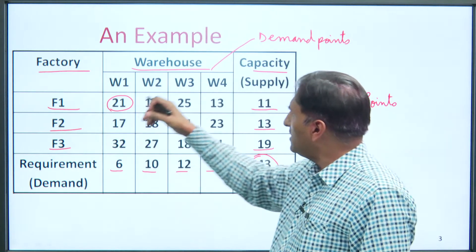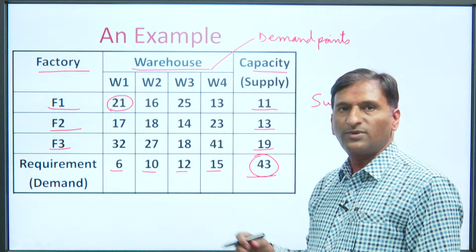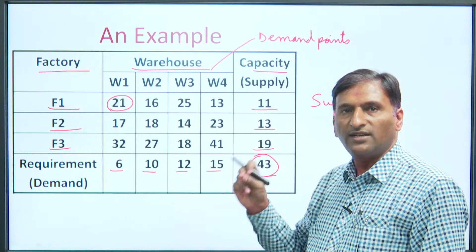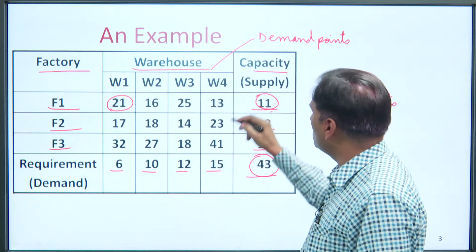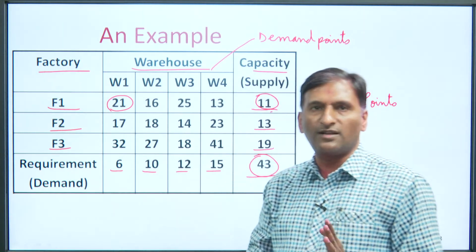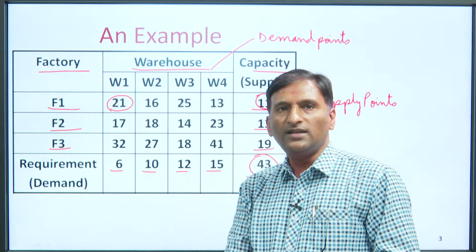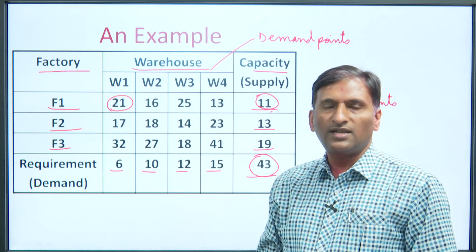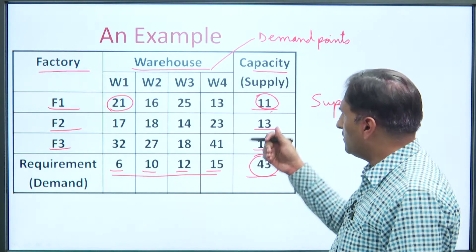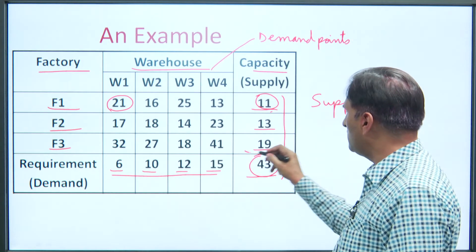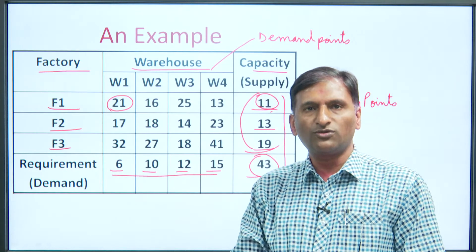Similarly, from F1 to W2 the per-unit cost is 16 rupees, and from F1 to W3 the per-unit cost is 25 rupees. However, the availability at F1 is only 11 units, so we cannot send 12 units from there — this is a constraint we must keep in mind. There is no restriction on which factory sends to which warehouse, but we must ensure that all requirements are met and that the same product is being produced and demanded.